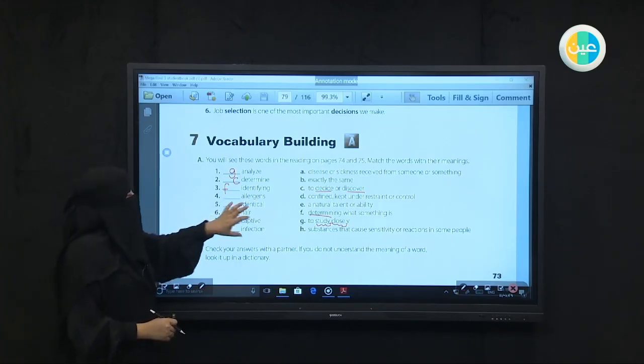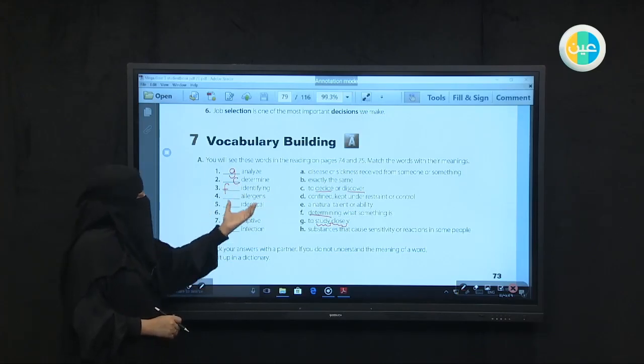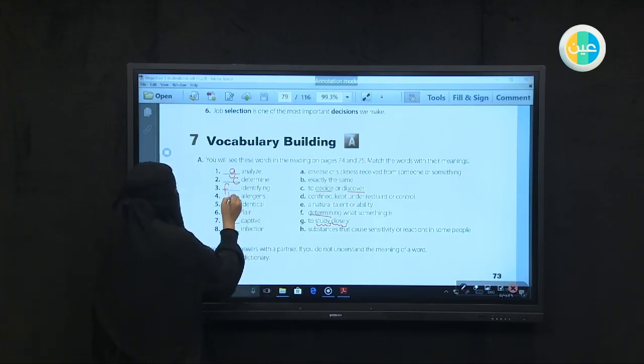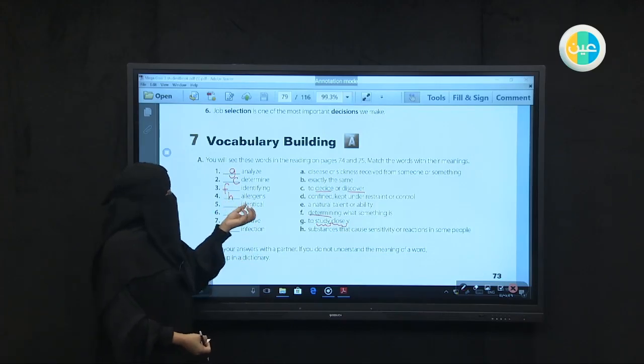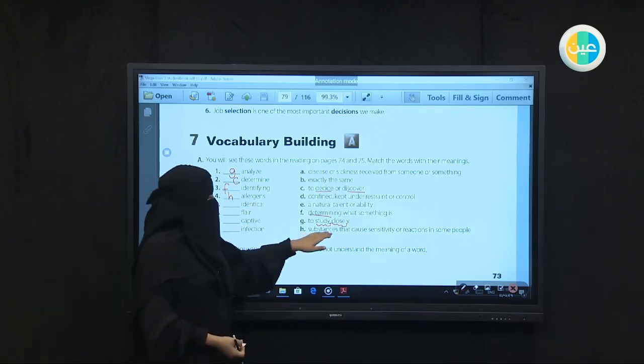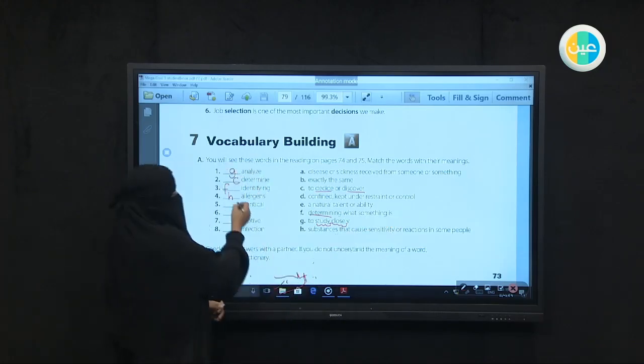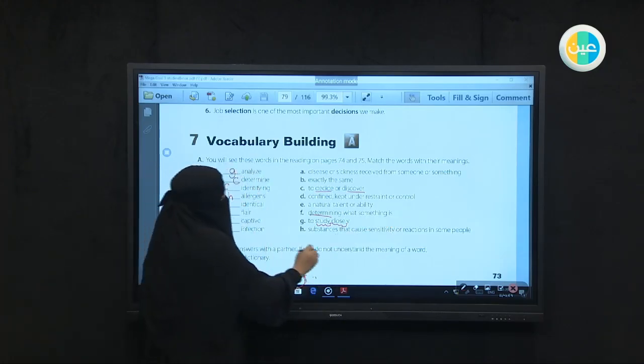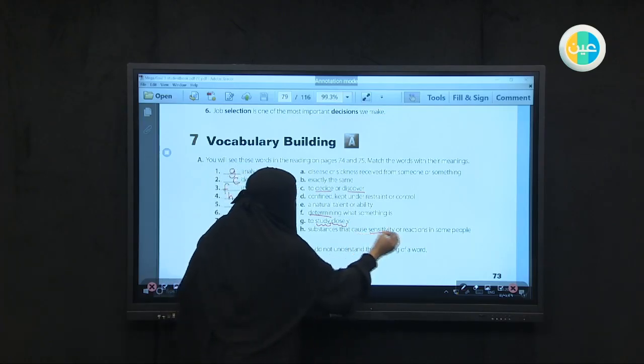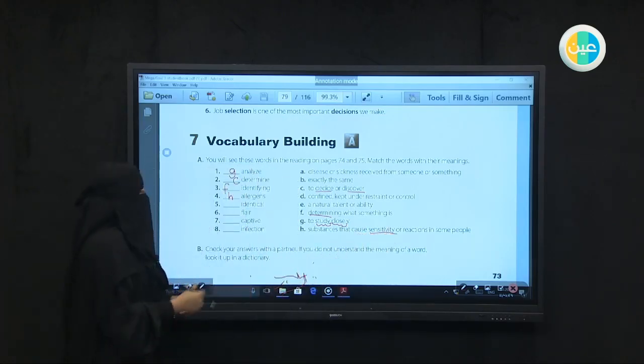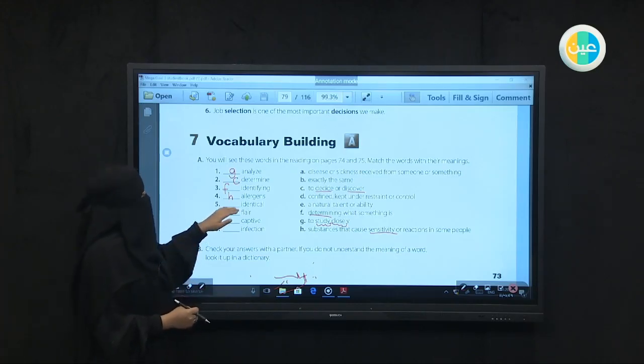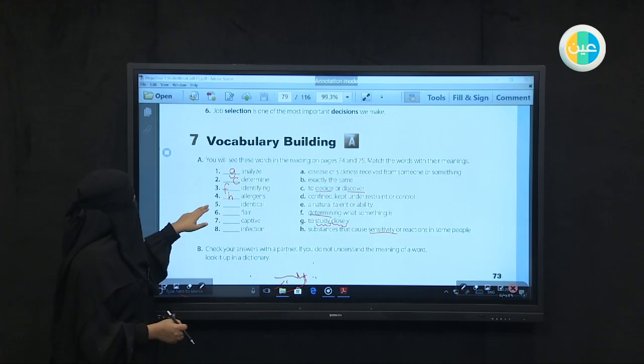Number 4, allergens. Notice the S here since this is a noun, this is a group of things - plural. And your answer will be H. Allergens from the word allergy, which is sensitivity. Allergens are the substances that cause sensitivity or reaction from some people. You can connect the word allergens with sensitivity, as it causes allergic reactions in people.